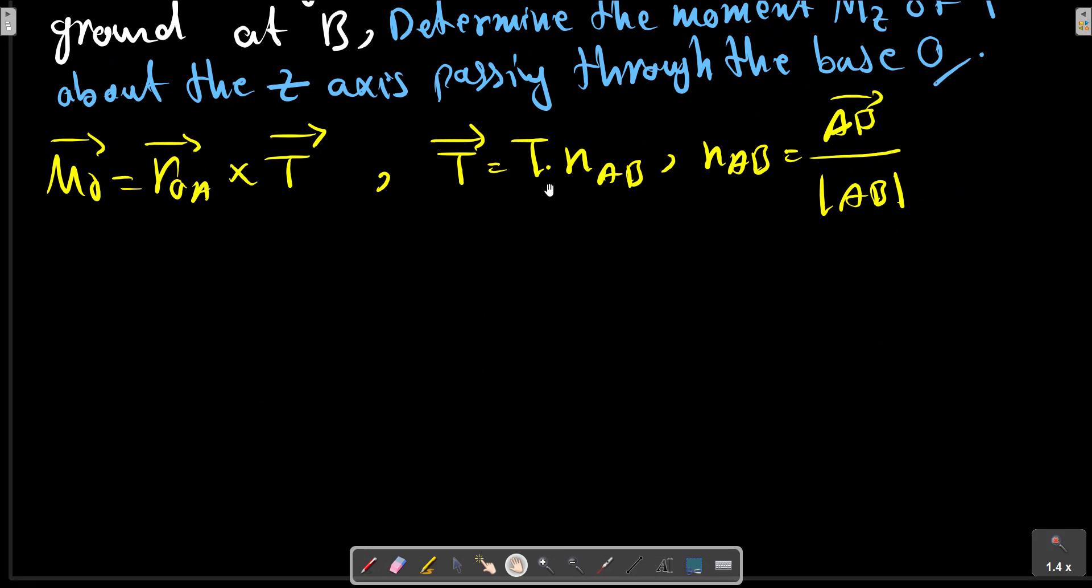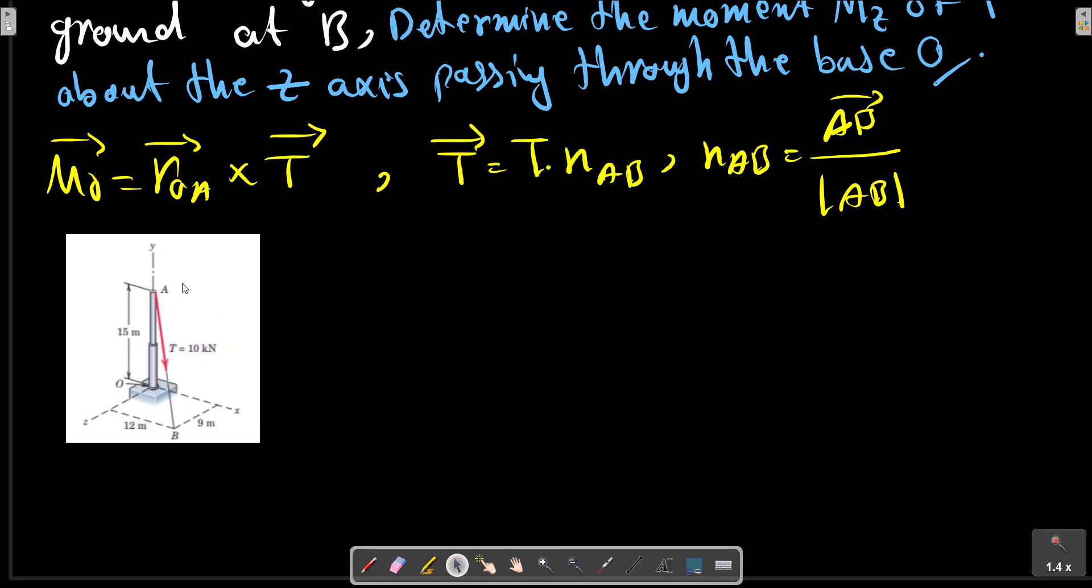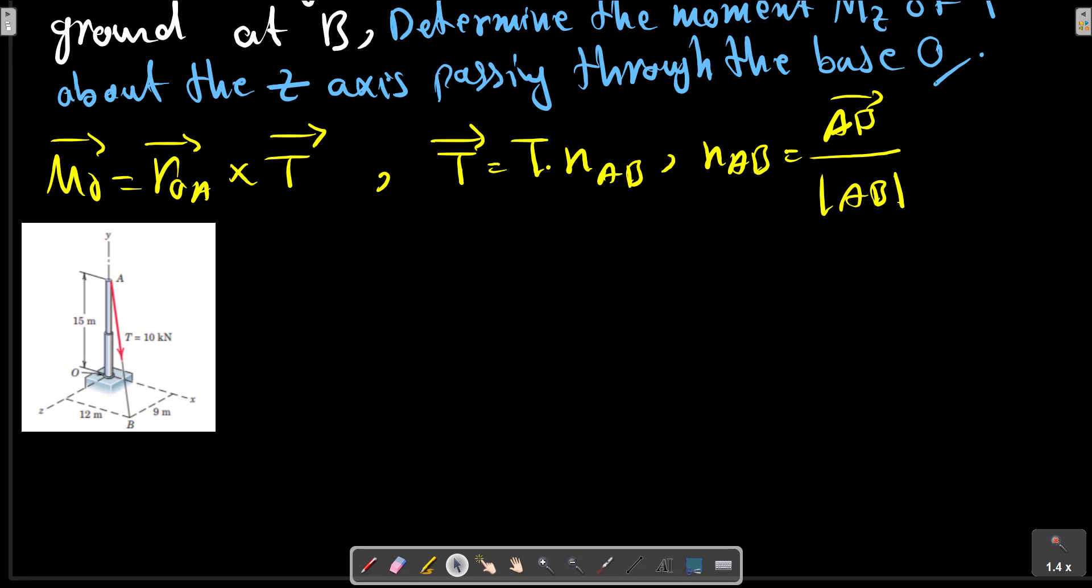To calculate from this picture, AB equals B minus A. Point B: y-direction 0, x-direction 12, and z-direction 9. Point A: x-direction 0, y-direction 50, z-direction 0.